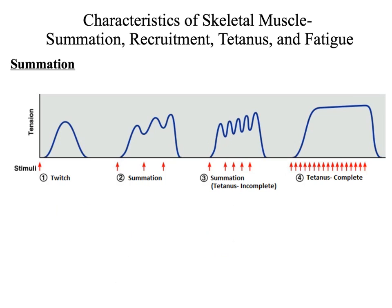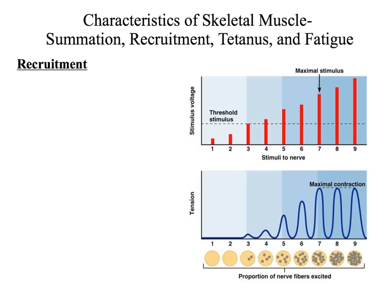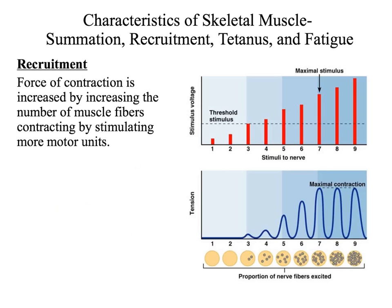Here we take another look at what happens when we increase the frequency of stimulation. With one stimulus you get a twitch; with multiple stimuli, we end up with summation of twitches. The second way to increase the force of a muscle contraction is by recruitment. During recruitment, the force of a contraction is increased by increasing the number of muscle fibers contracting through stimulating more motor units. When we increase the size of the stimulus, we recruit more motor neurons, which increases the strength of the muscle contraction.